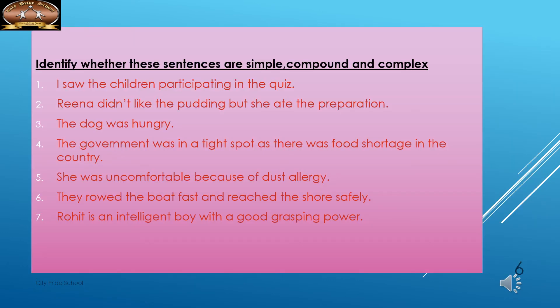To summarize: in simple sentences there is only one finite verb and no conjunction connecting ideas. In compound sentences, a coordinating conjunction connects two simple sentences with two finite verbs. In complex sentences, one is the main clause and the other is the dependent clause joined by a subordinating conjunction.